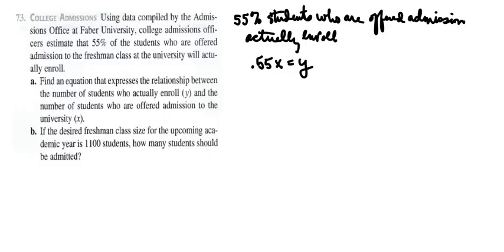If the desired freshman class size for the upcoming academic year is 1,100 students, that means that we want the number of people who actually enroll, which is Y, to equal 1,100 students, then how many students should be admitted? So what we're going to do is just take that equation that we just wrote and set Y equal to 1,100, because we want that to be the number of people who actually enroll.